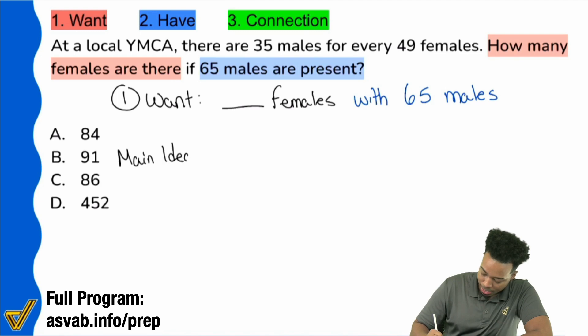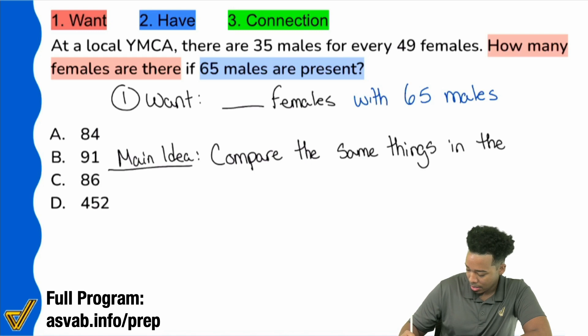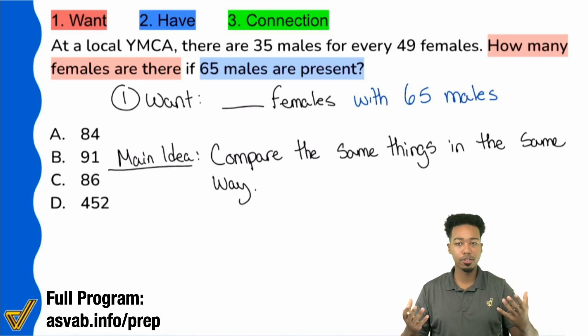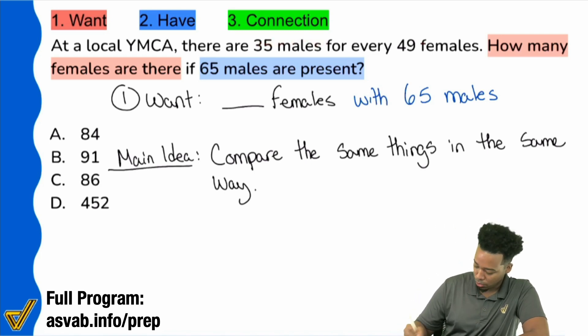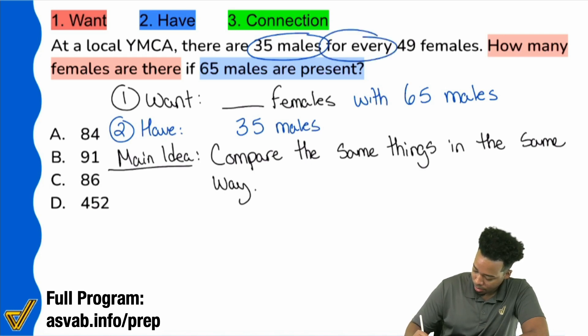So that's connected together. You want to write those down together: blank females with 65 males. Now that we know the goal, we want to know the number of females. Now we're going to look at the information that can help clue us in, in terms of how we can get there. When we take a look at the problem, here's what we're going to highlight. We see that at a local YMCA, there are 35 males for every 49 females. Now this problem is trying to trick you. This problem is definitely trying to trick you.